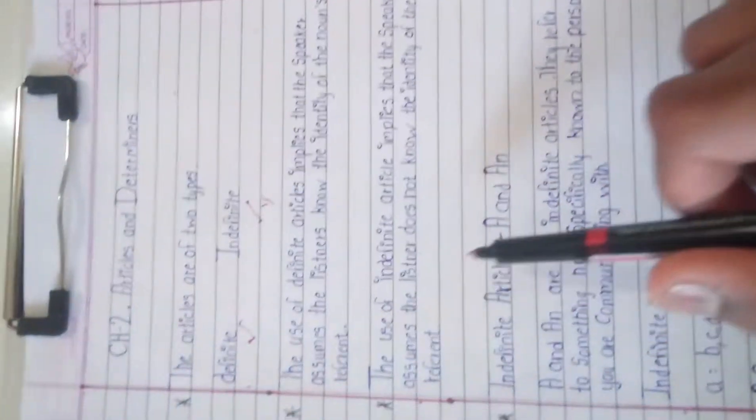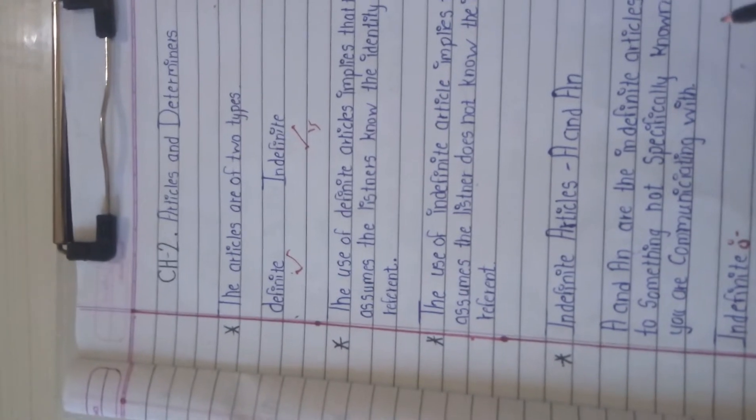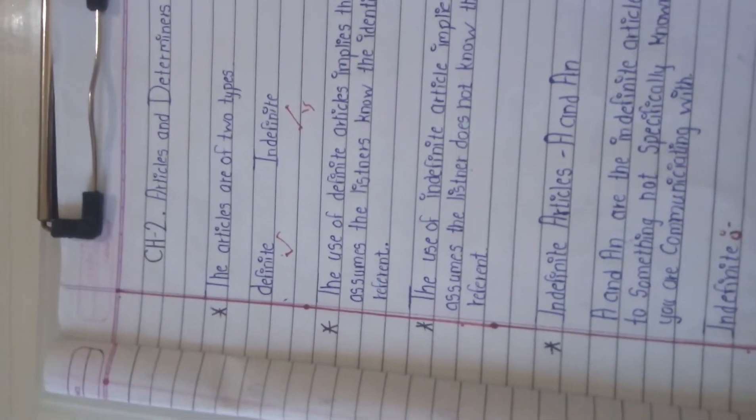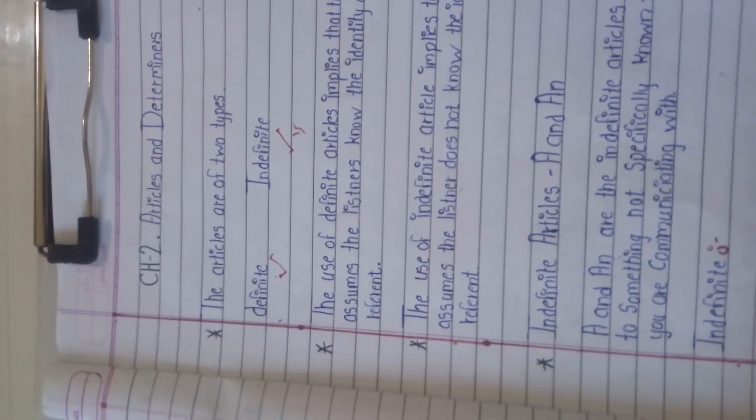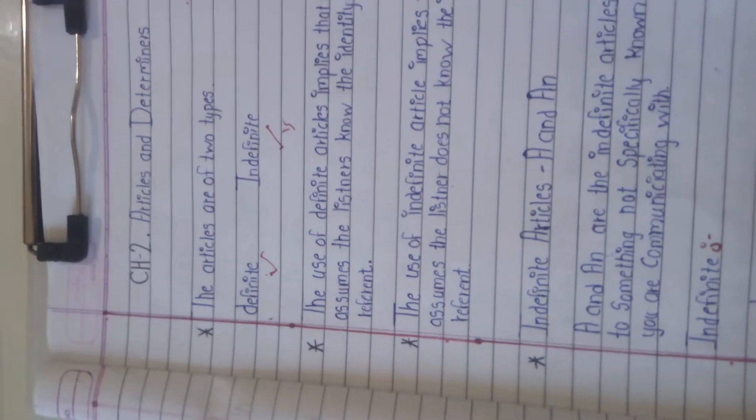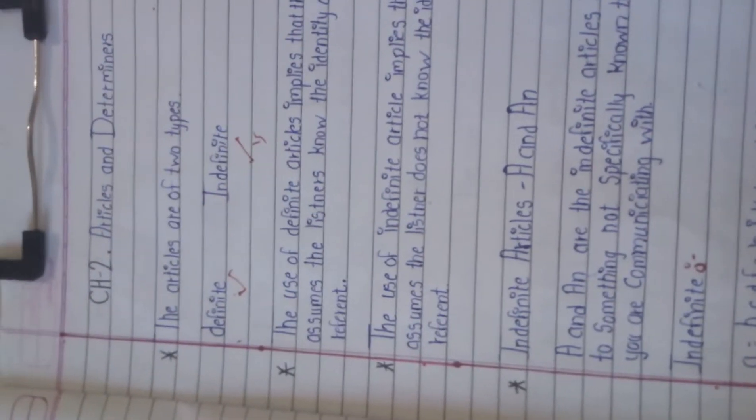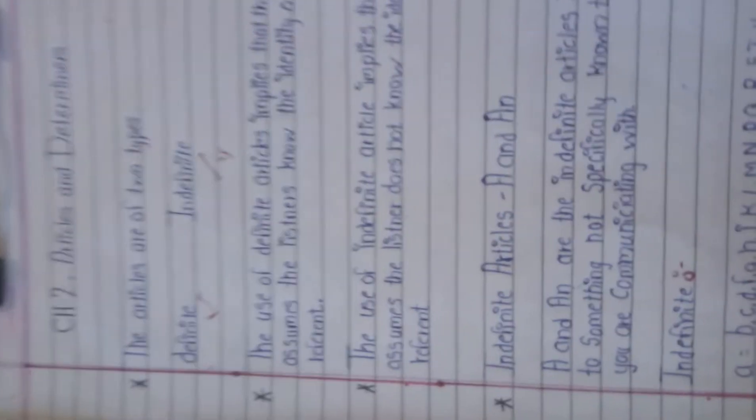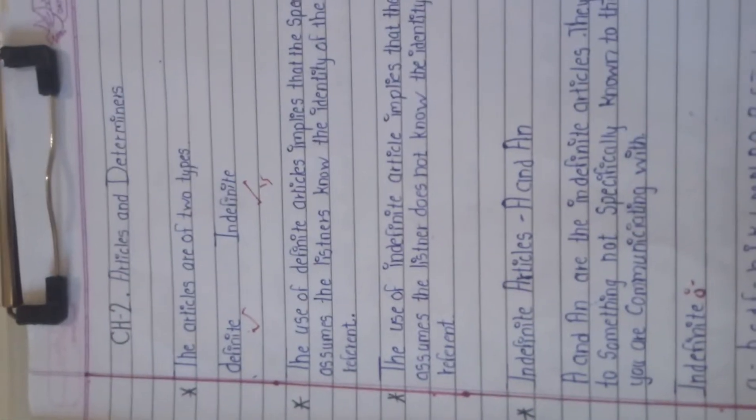A and AN are the indefinite articles. They refer to something not specifically known to the person you are communicating with. A and AN are used before nouns that introduce something or someone you have not mentioned before. For example: I saw an elephant this morning.